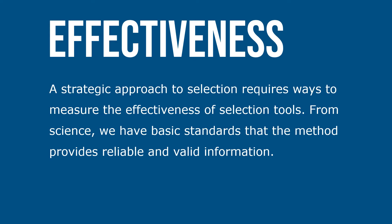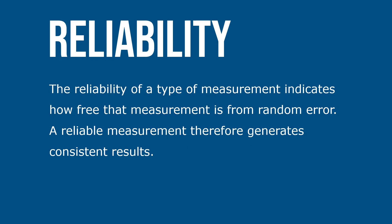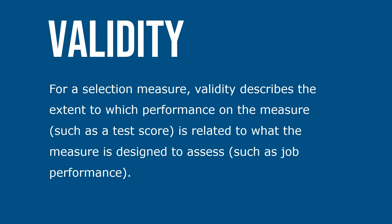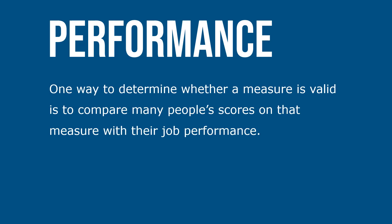A strategic approach to selection requires ways to measure the effectiveness of selection tools. From science, we have basic standards that the method provides reliable and valid information. The reliability of a type of measurement indicates how free that measurement is from random error; a reliable measurement generates consistent results. For a selection measure, validity describes the extent to which performance on the measure, such as a test score, is related to what the measure is designed to assess, such as job performance. One way to determine whether a measure is valid is to compare many people's scores on that measure with their job performance.